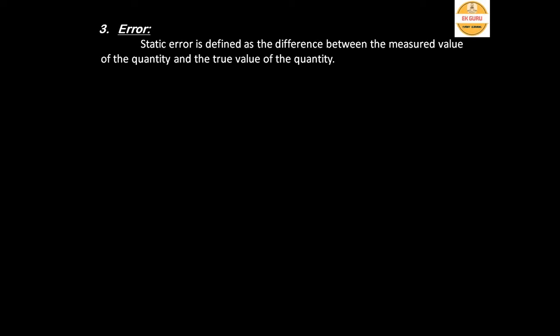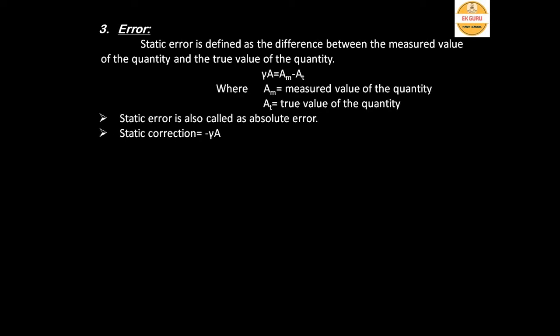The third characteristic is error. Error is simply the difference between the true value and the measured value. Static error is the difference between the measured value and the true value, represented as γa = Am − At. Since some errors cannot be avoided, we apply a static correction, where static correction equals the negative of the static error.